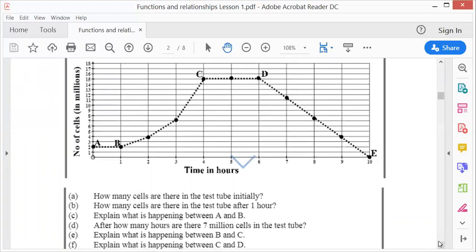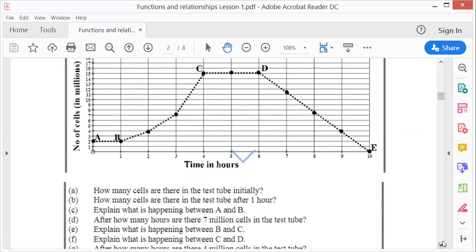Next question: what happened between C and D? C and D is the same like A and B. So you know, time is marching on, but the growth of bacteria did not take place. So the bacteria did not increase over those two hours.